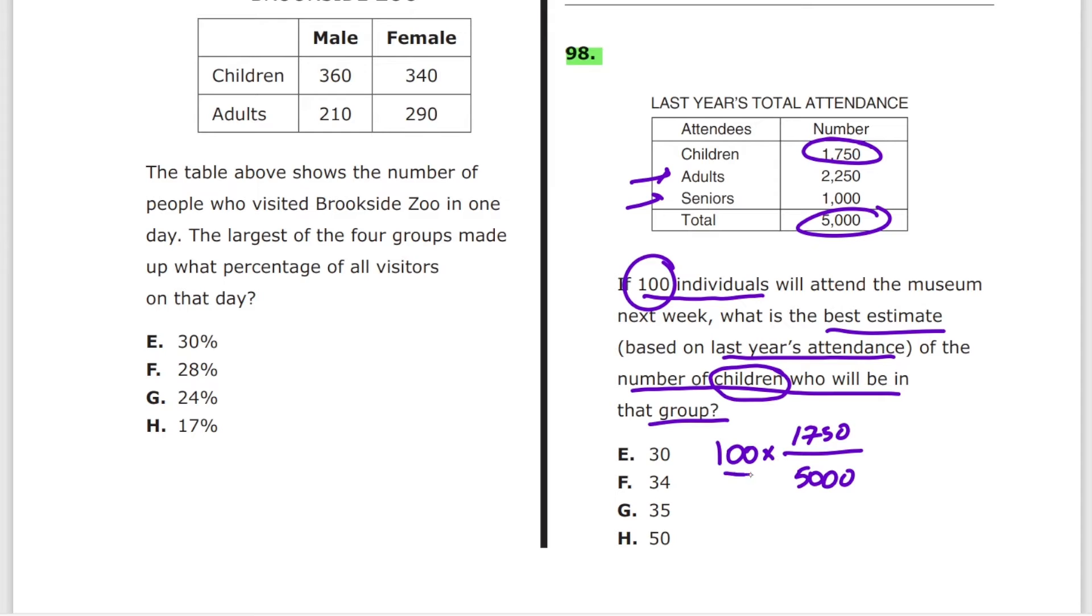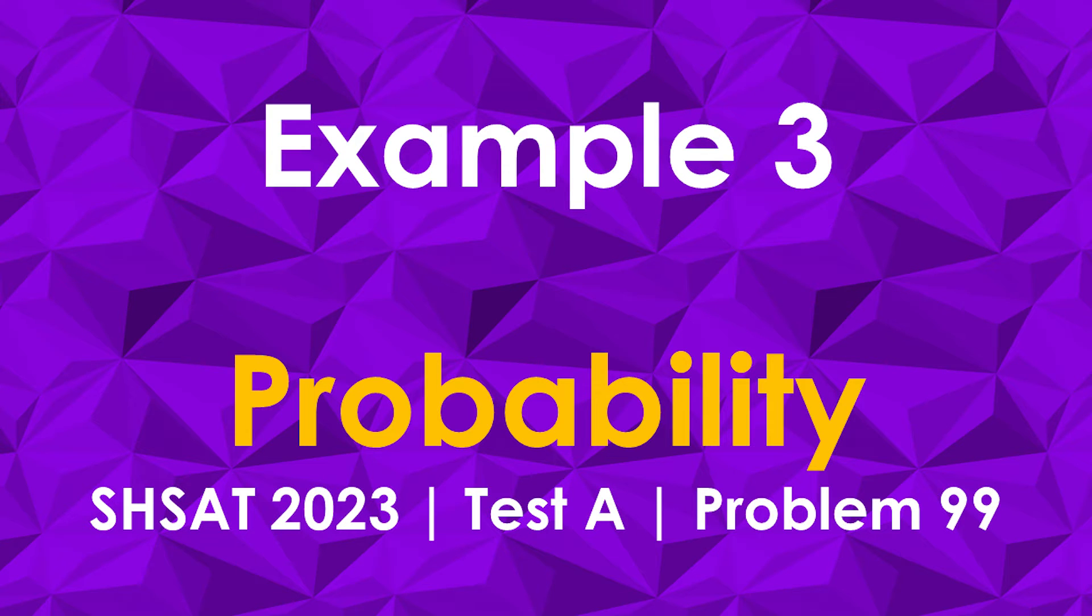100 is 100 over 1. Divide this by 100, divide this by 100. Here you get 50, here you get 1. So it's 1 over 1, which is 1, multiply by 1,750 over 50. Drop the zero. It turns into 175 over 5, and this is 35, option G.